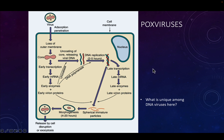What is unique among DNA viruses is that poxvirus replication occurs in the cytoplasm — poxviruses don't enter the nucleus. You can also think about this in the context of oncogenicity. We've talked about viruses that can be oncogenic and cause cancer, but we don't typically see poxviruses as cancer-causing viruses. Consider why that might be.